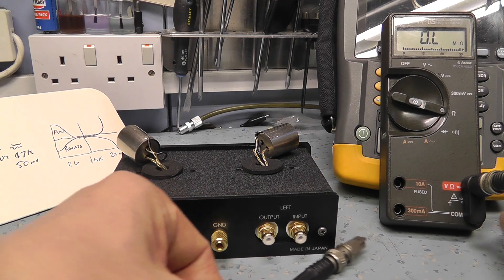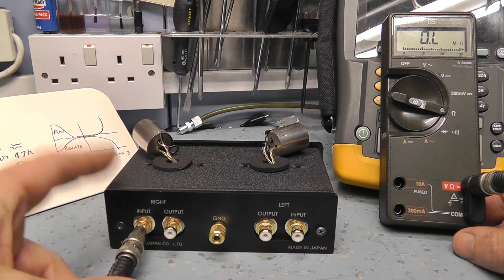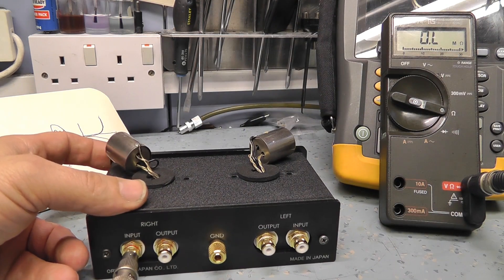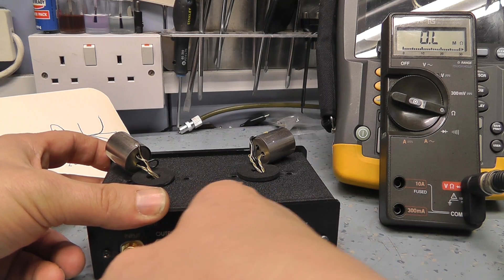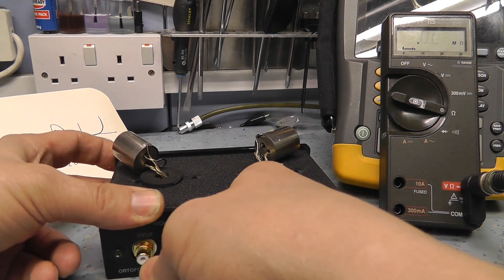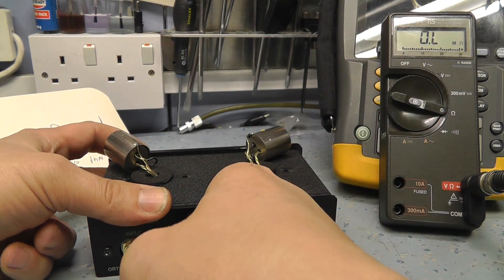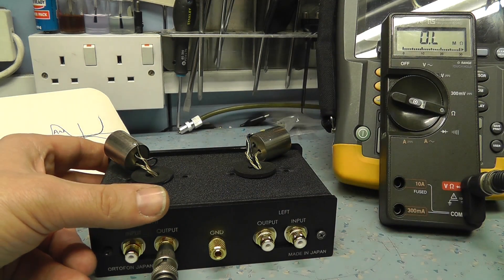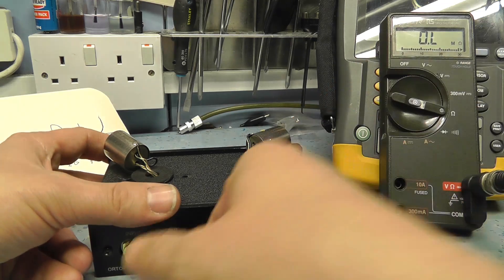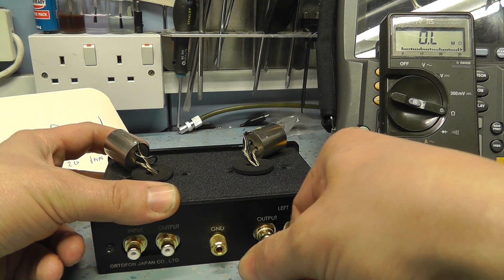So we're connected up to this BNC lead via a phono adapter. So let's go to input one. And straight away we've got open circuit. So that's not a good sign. So we've got an open winding there. Let's go to the output. And that's pretty poor as well. No, nothing there.